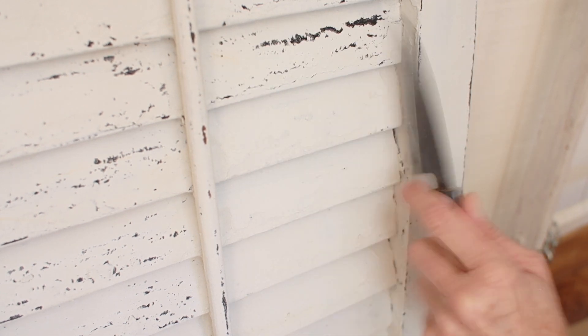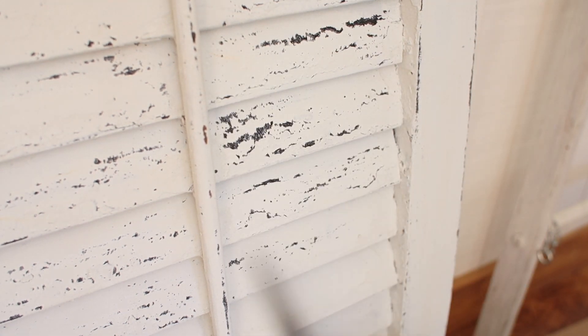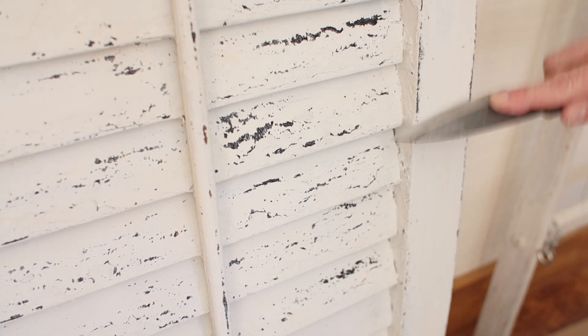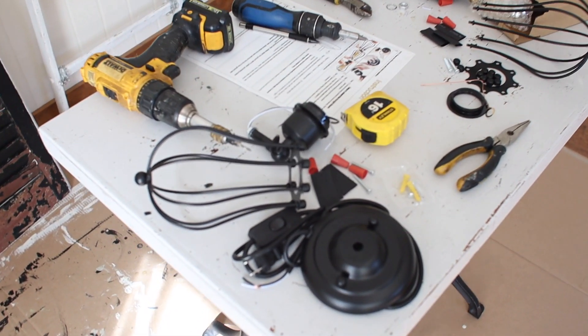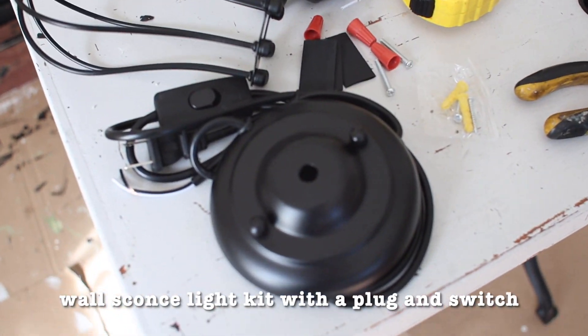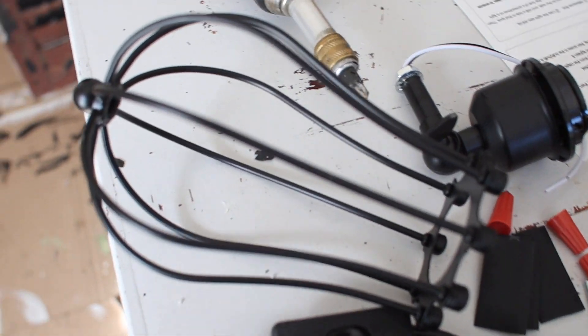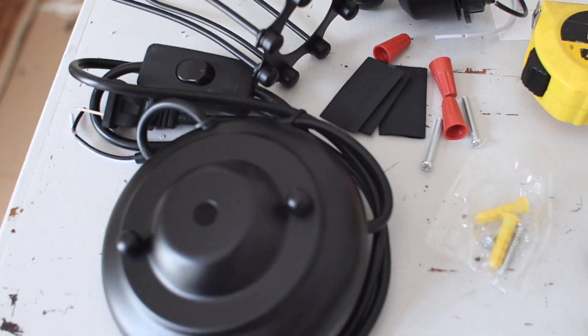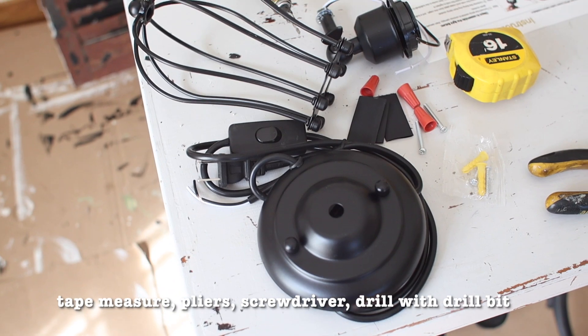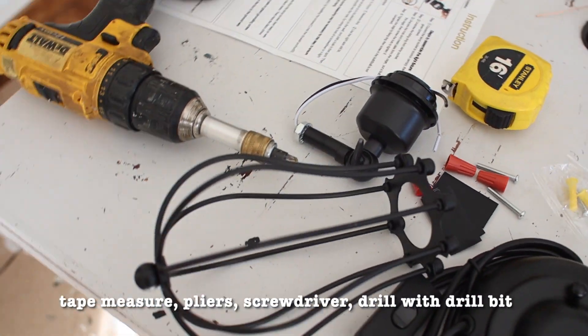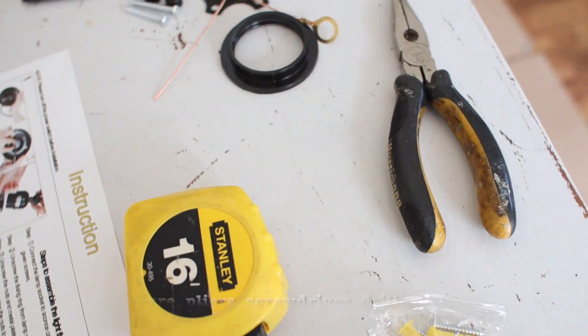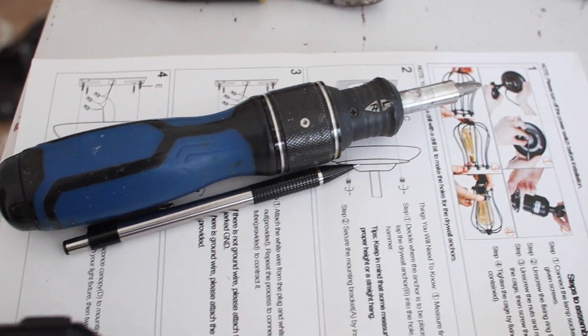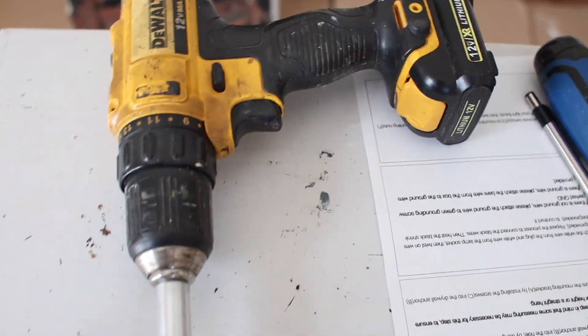Let's go over the supplies that you'll need. You'll need a wall sconce light kit that has a plug and a switch, and it will include all of the hardware that you see here. My kit was a pair and it was under $40. You'll need a tape measure, a pair of pliers, a screwdriver, and a power drill with a drill bit.